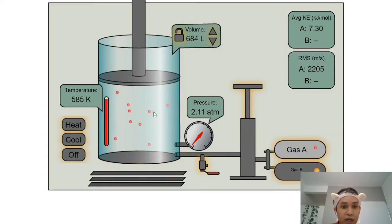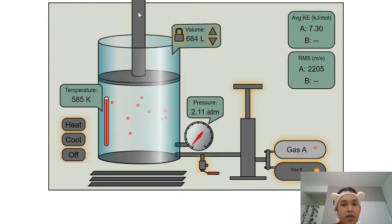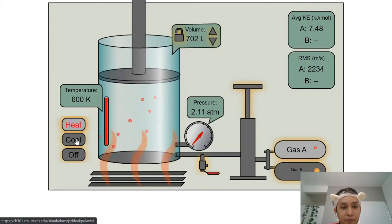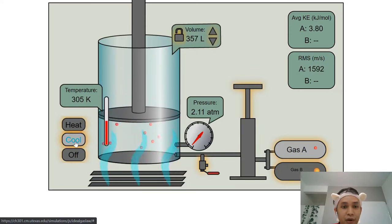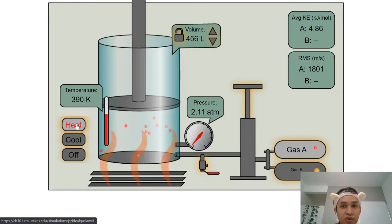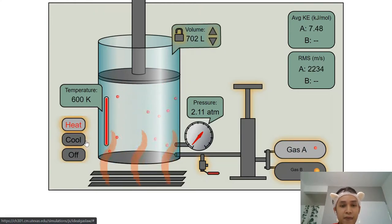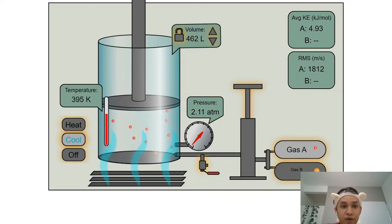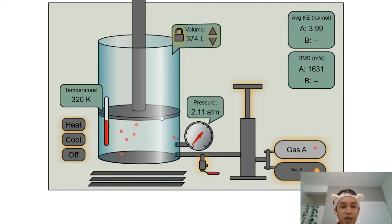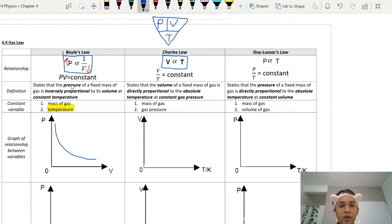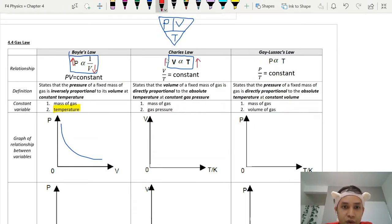As the collisions happen faster, the air molecules push the piston up. When I cool the temperature, you can see the volume also decreases. So when temperature increases, volume is also increasing, and when temperature decreases, volume decreases. This is the relationship Charles' Law describes — temperature and volume are directly proportional.